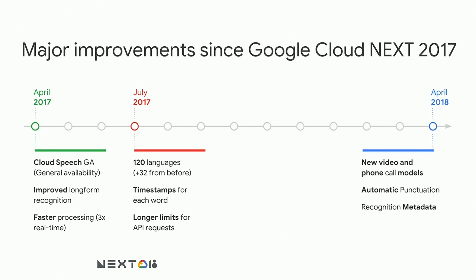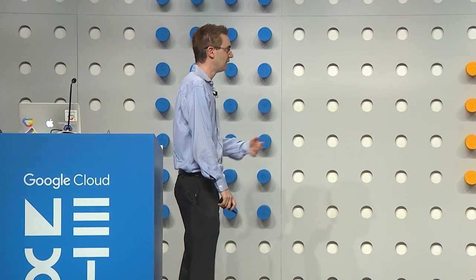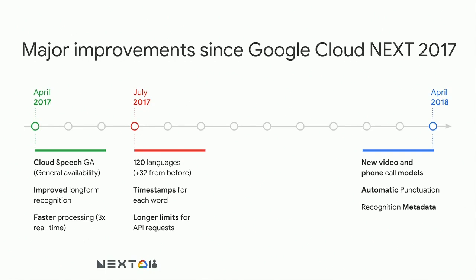How many people here were at our Google Cloud Next session last year on speech-to-text? It's hard to believe, but last year when we were here, the product was still in beta. We actually only announced GA just over a year ago in April 2017, along with long-form recognition. The product has gone through so much since then. We've added 30 new languages — we're now at 120 languages. Mind-boggling. And a bunch of other features like timestamps, punctuation, and the new models, which we'll talk about later.